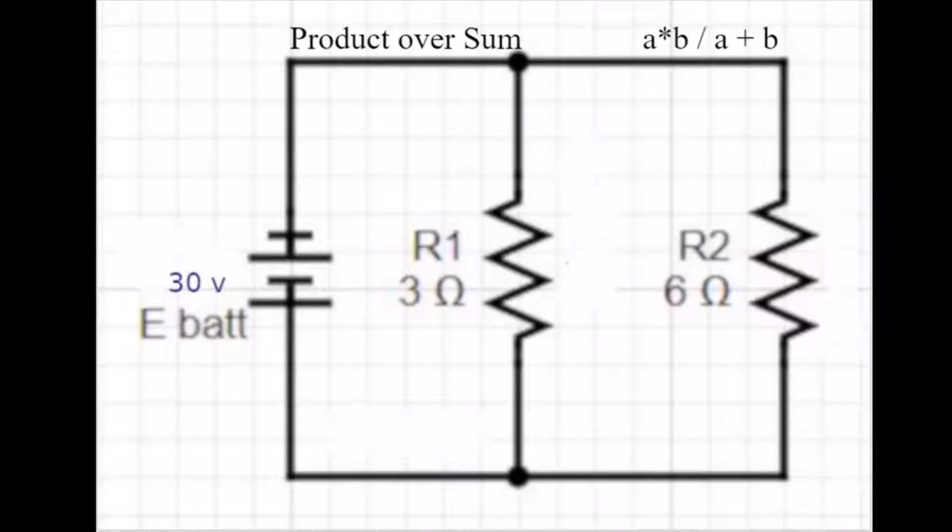As soon as we see a circuit puzzle like this, we should immediately look for all the different parts. Well, we've got the source voltage, 30 volts. We've got R1, which is 3 ohms, the size of that resistor. R2, 6 ohms, the size of that resistor.